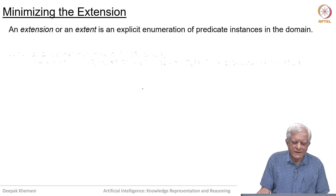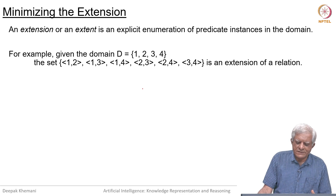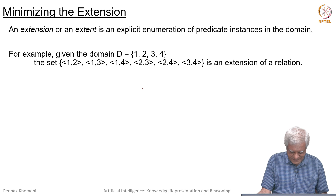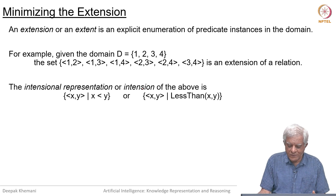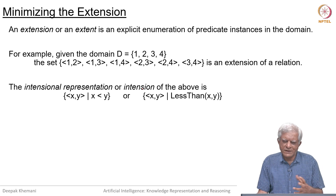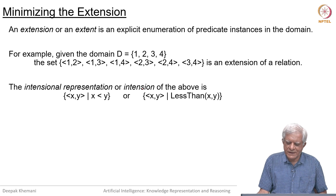An extension is an explicit enumeration of a predicate instance. For example, if your domain has four numbers 1, 2, 3, 4, then the pairs listed here form an extension of a relation — the same relation written in intensional form would be written as the set of all pairs (x, y) such that x is less than y. When we write the intensional form, we exploit the power of first-order logic, but when we write the extension, we are stating all the facts individually and explicitly.